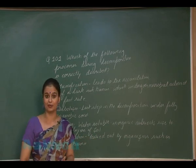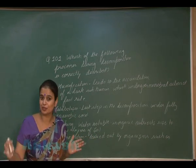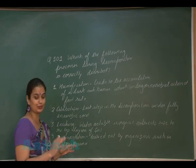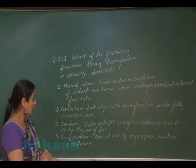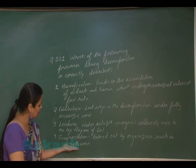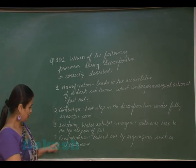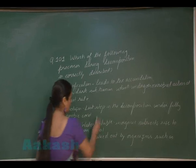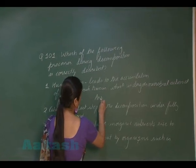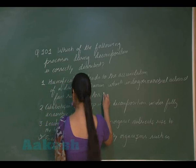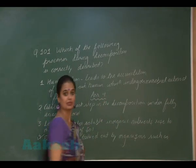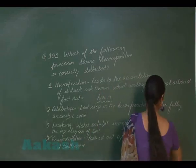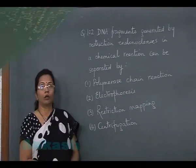The last option is fragmentation, which is carried out by earthworms. Earthworms break larger pieces of organic matter into smaller ones — this is known as fragmentation, and the organisms involved are known as detritivores. So the correct answer for question 101 is option 4.